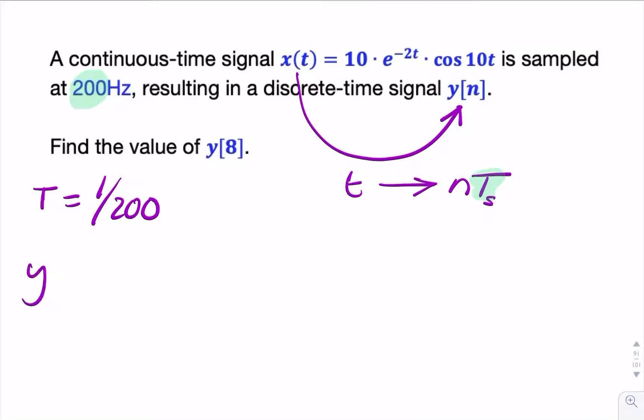So we can write y[n] as simply 10e to the minus 2n times 1 over 200. So I'm replacing t with n uppercase T. And then cosine 10 times n times 1 over 200. So that's my discrete time representation.